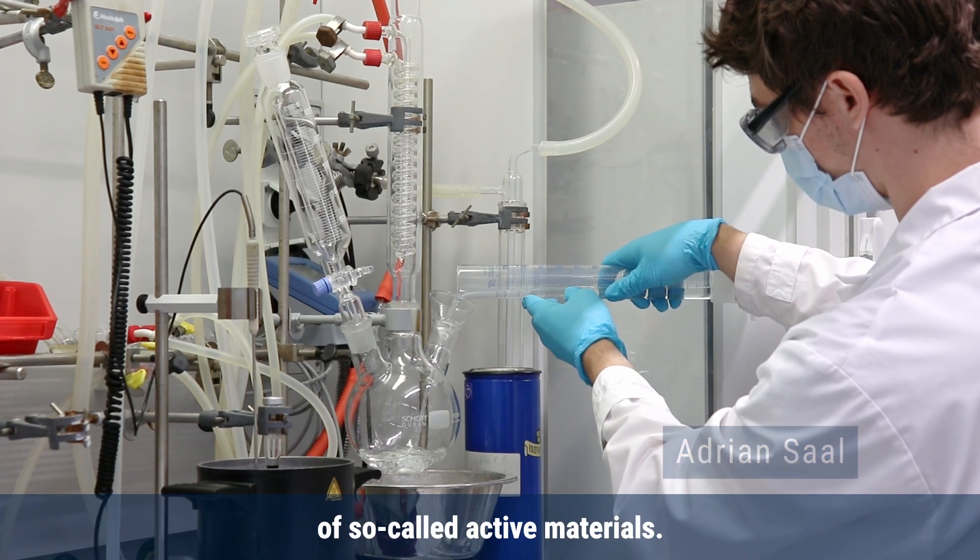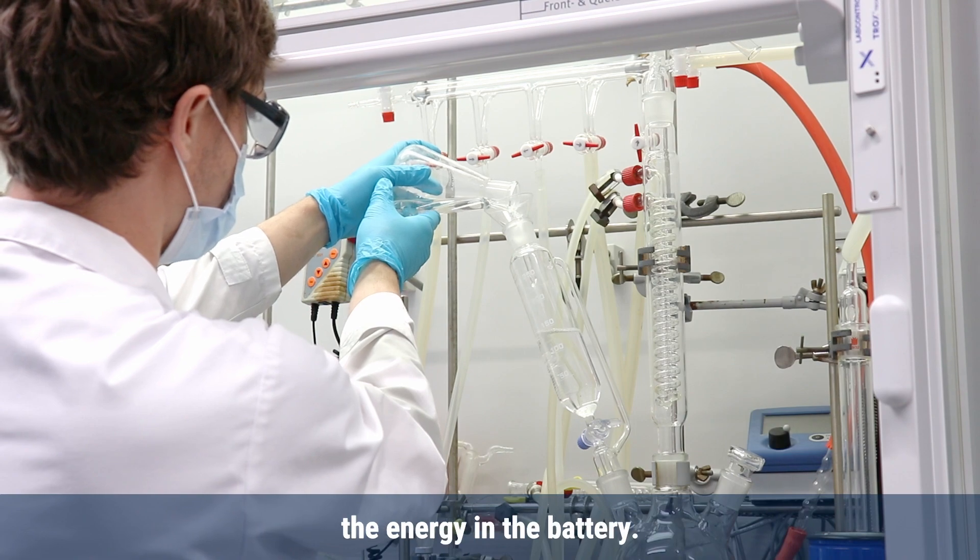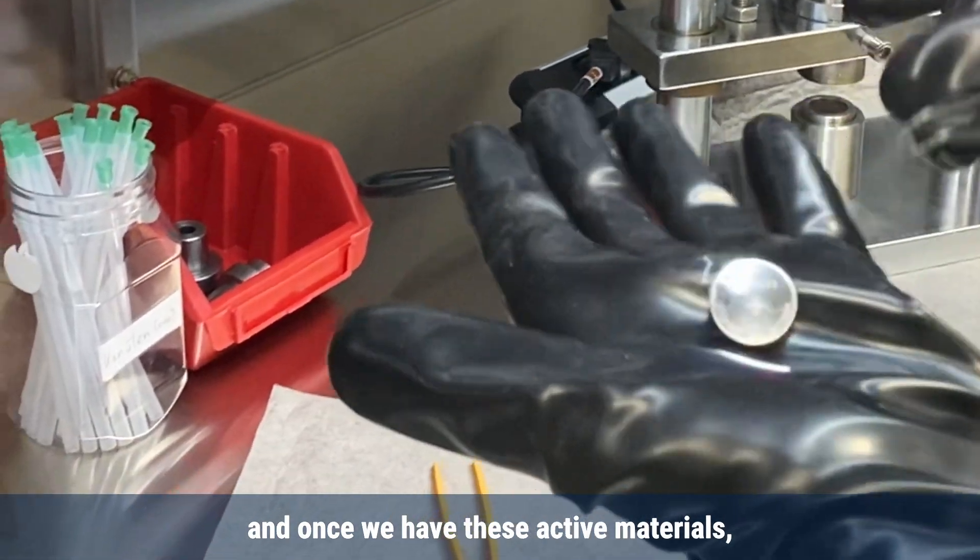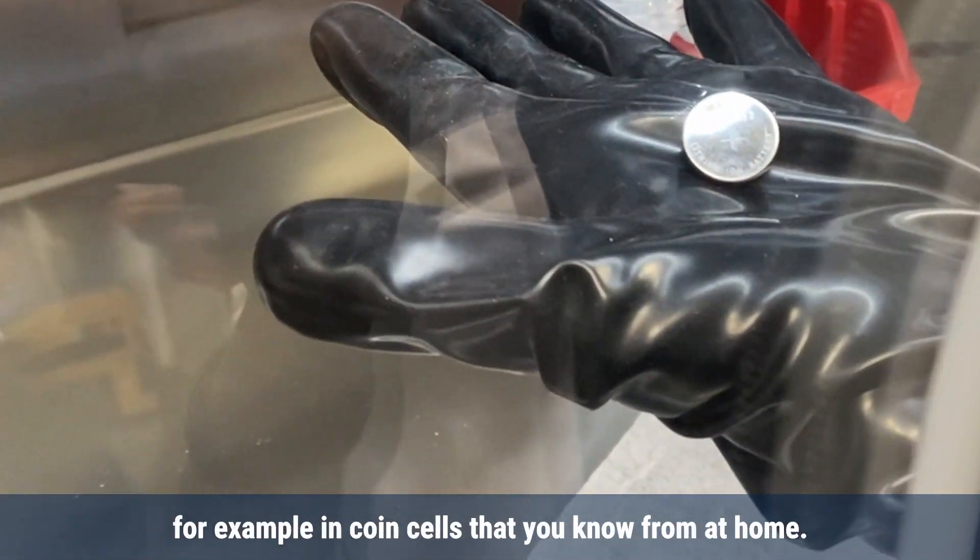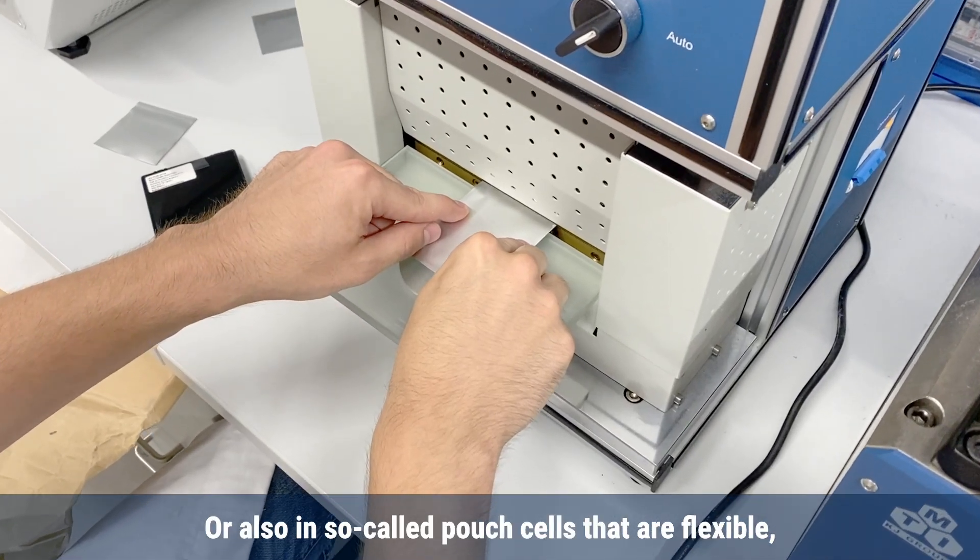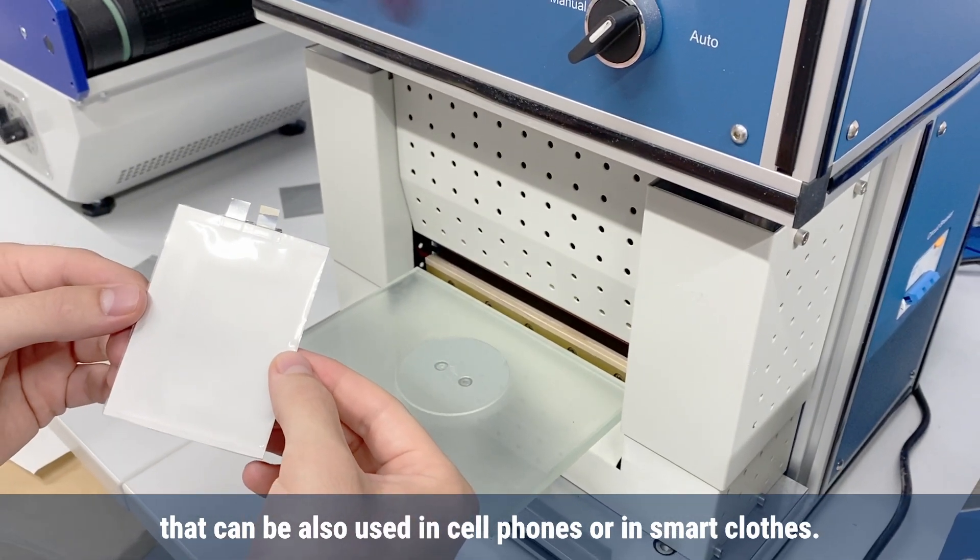For the research of new materials for organic batteries, we start normally with the synthesis of so-called active materials—the materials that can store the energy in the battery. This is done in a common chemical lab. Once we have this active material, we test them in different formats, for example in coin cells that you know from home, or also in so-called pouch cells that are flexible and can be used in cell phones or smart cloths.